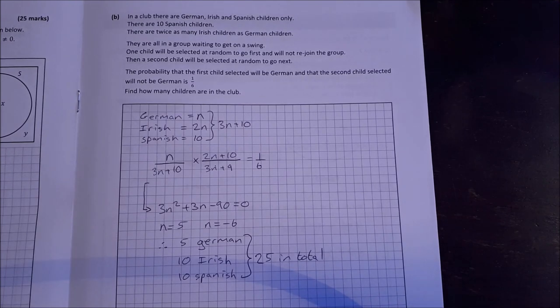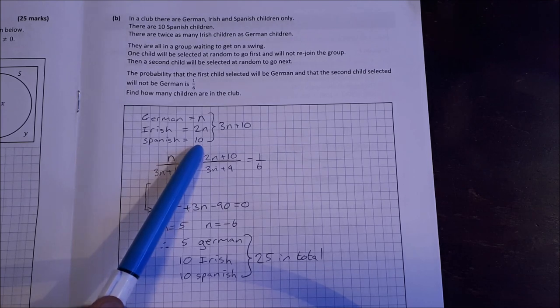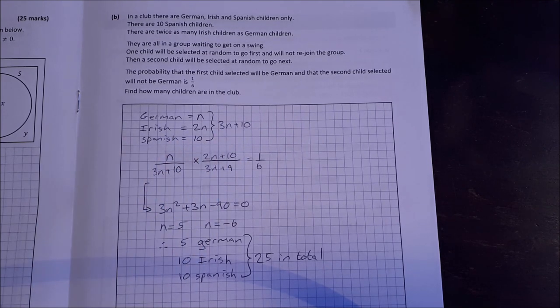Part B. In a club, there are German, Irish and Spanish children. There are 10 Spanish children. There are twice as many Irish children as German children. They're all in the group waiting to get on a swing. One child will be selected at random to go first and will not rejoin the group. Then a second child will be selected at random to go next. The probability that the first child selected will be German and that the second child selected will not be German is 1 over 6. How many children are in the club? Well, there's N German, there's 2N Irish and there's 10 Spanish. So altogether we have 3N plus 10 children.